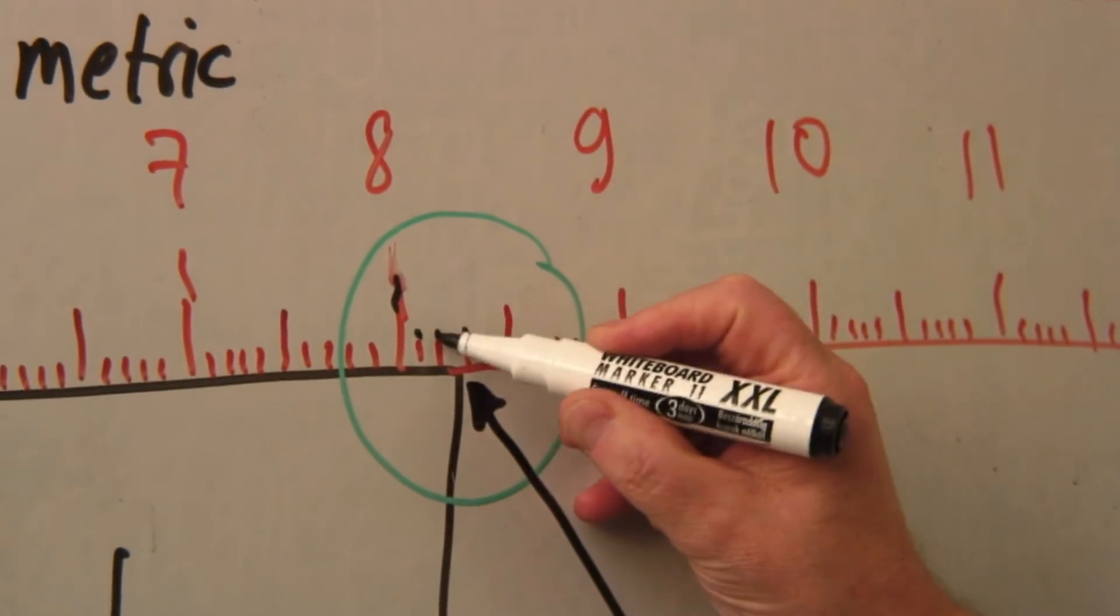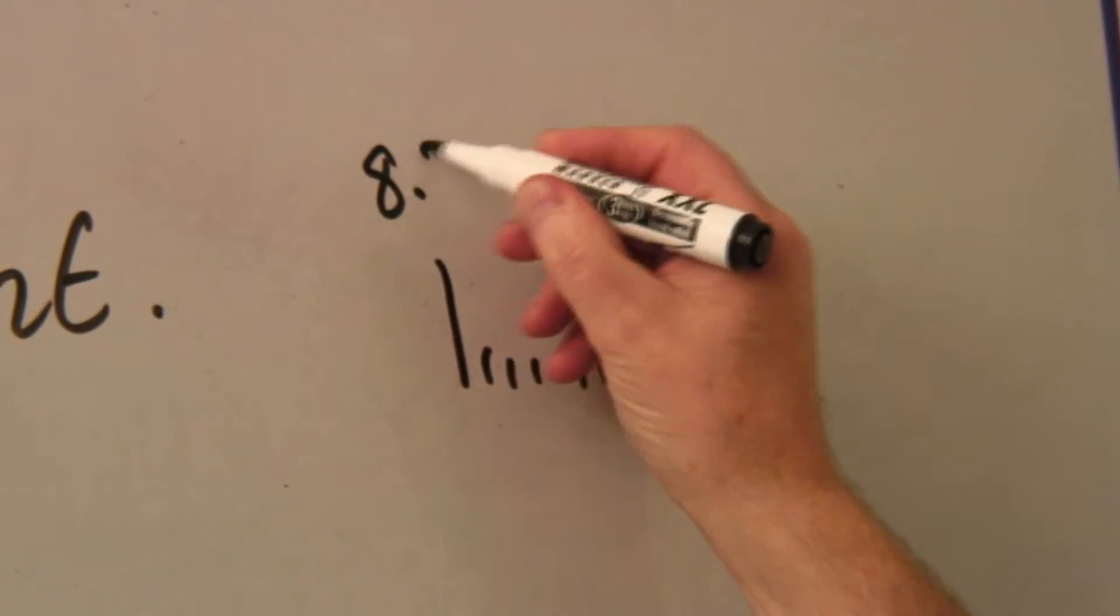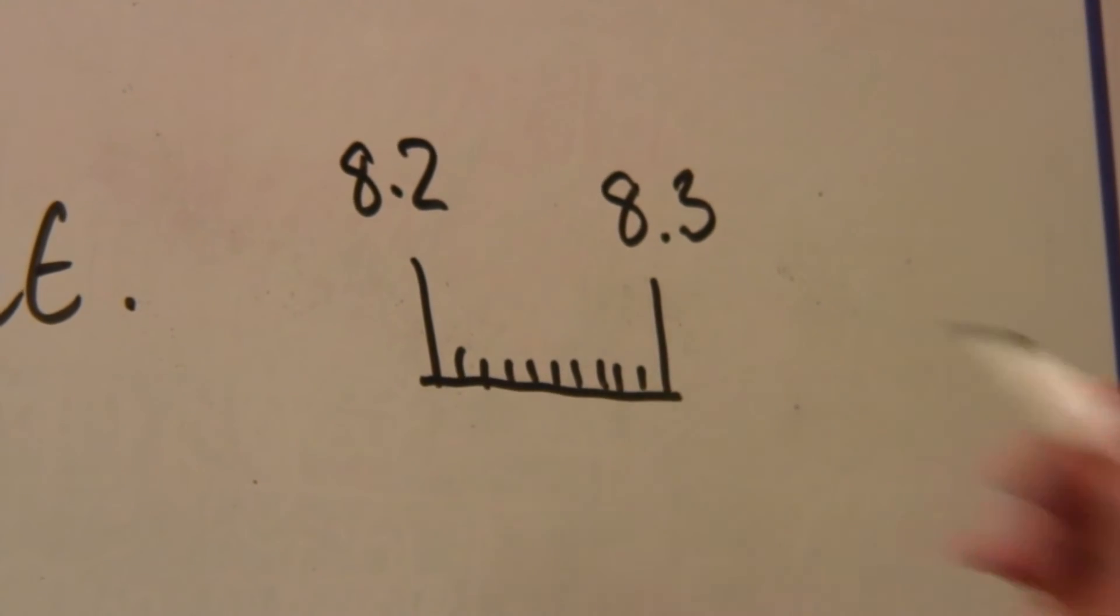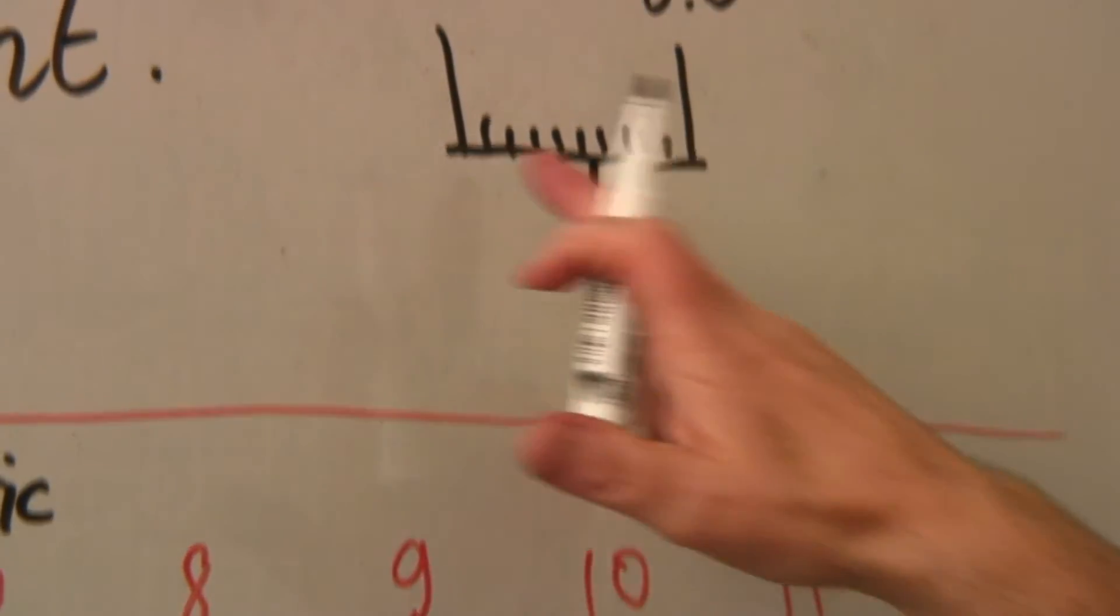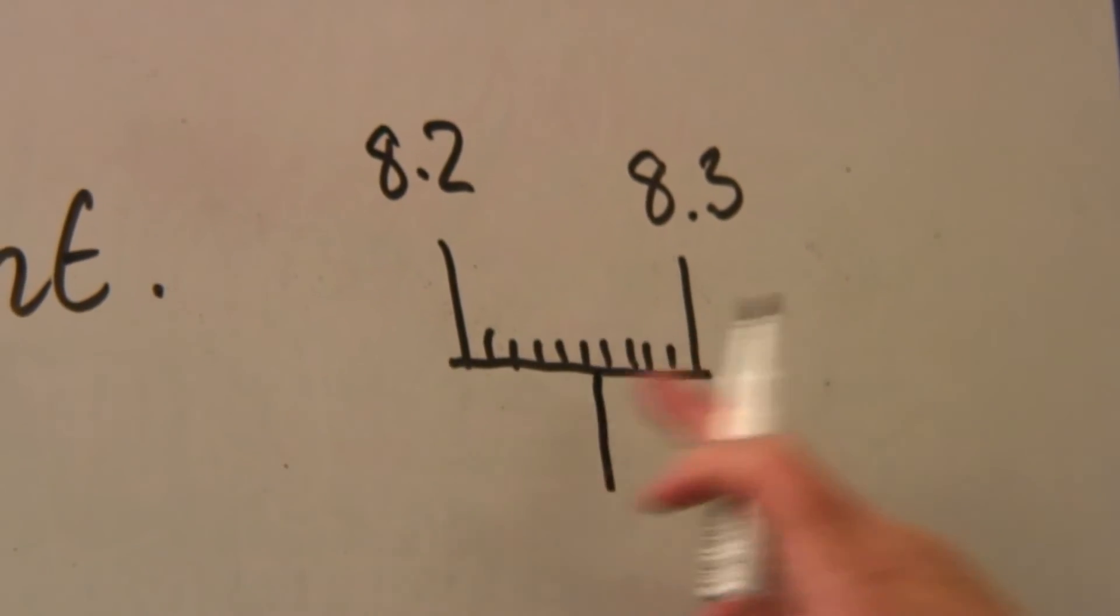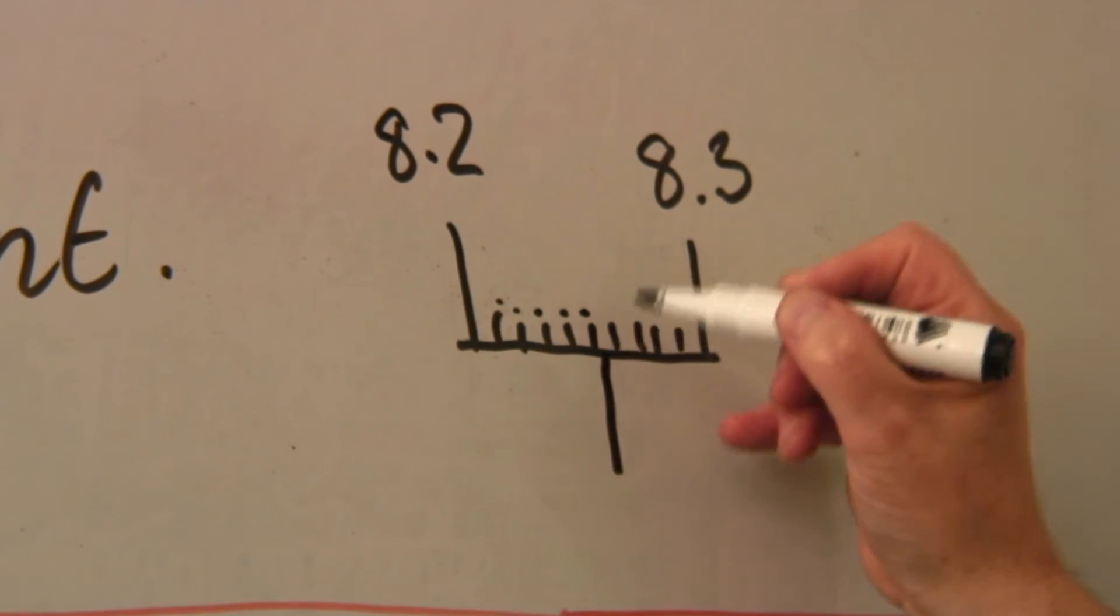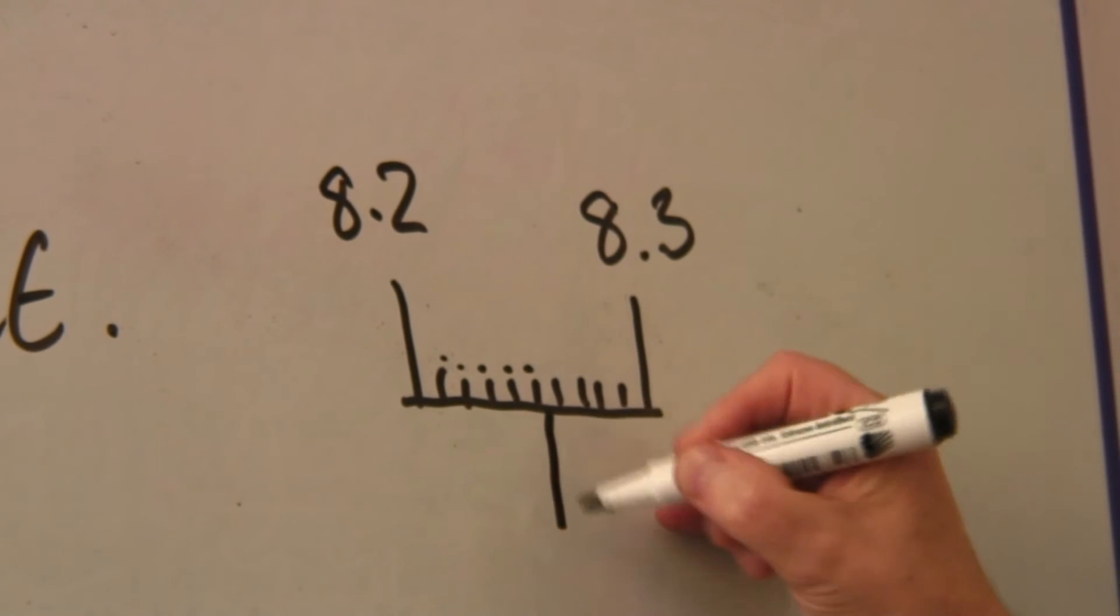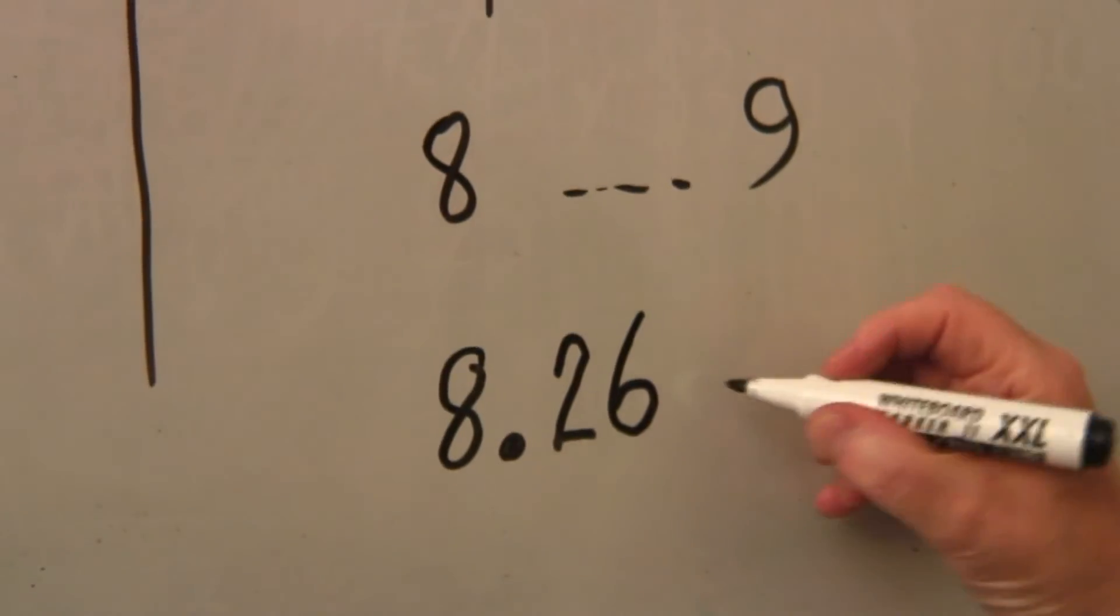Between these two markers that I've put in dots on, here they are. This is eight point two, and this is eight point three, and this is the edge of the ruler. We can see that it's actually coming, say, here somewhere. So you've got to imagine ten little spaces here, and one, two, three, four, five, about five, six, something like that. So you estimate the last number. So, eight point two six, whatever units.